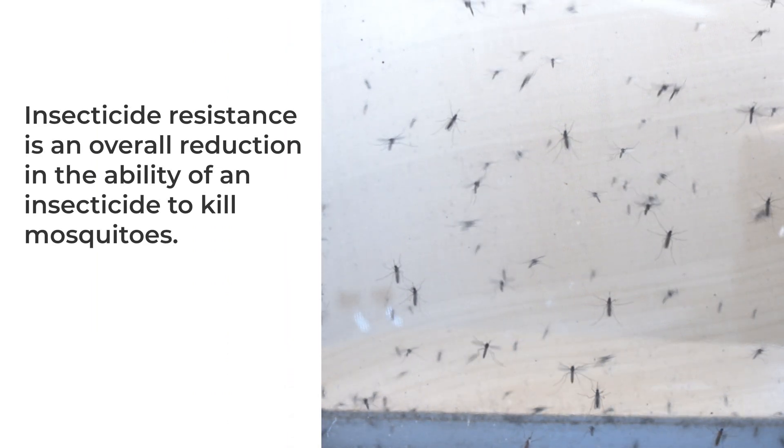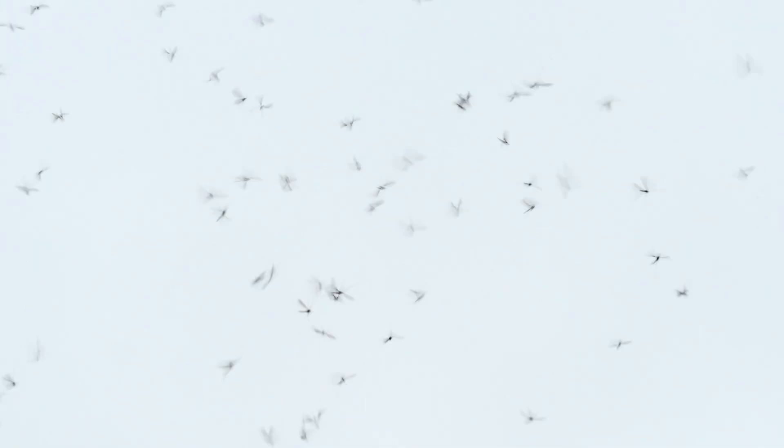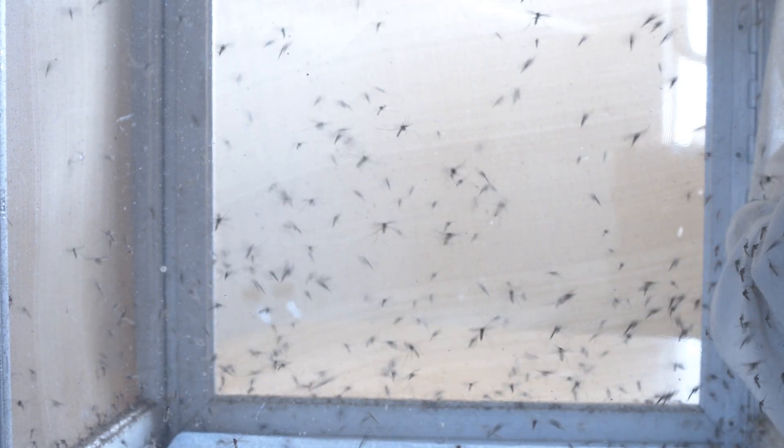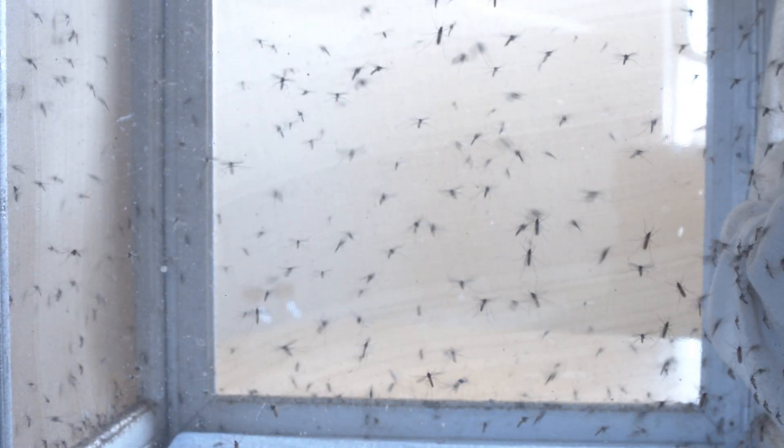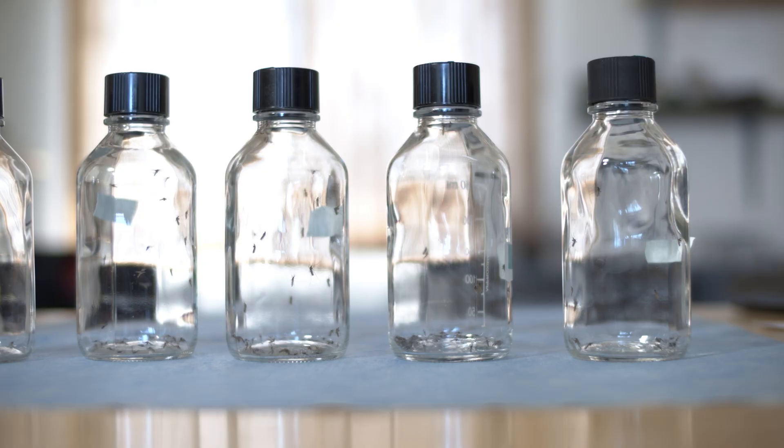Insecticide resistance is an overall reduction in the ability of an insecticide to kill mosquitoes. This means that when used as directed, a product no longer works or only partially works to control mosquitoes. Insecticide resistance can be product-specific or it can develop to a certain class of product.